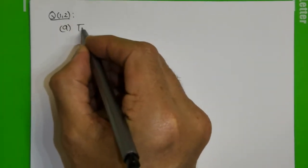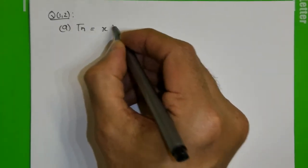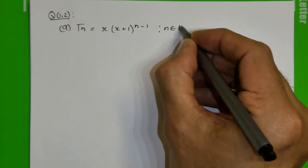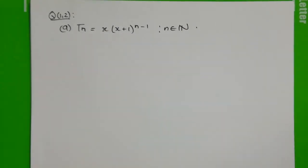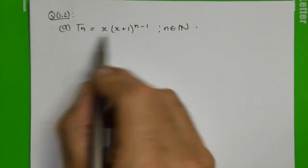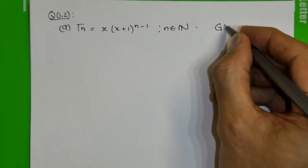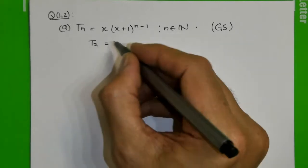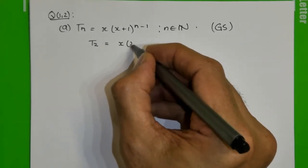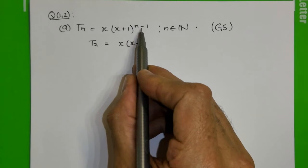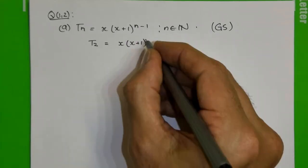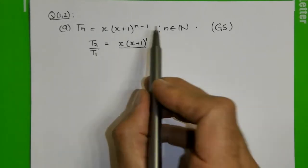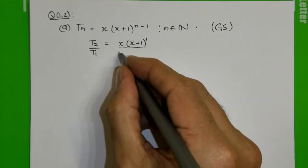First of all, they said Tn is x multiplied by x plus 1 to the power of n minus 1, where n is an integer. They ask us for the constant ratio, so we have to find two consecutive terms. Remember, they told us it's a geometric sequence. So term 2 will be x multiplied by x plus 1 to the power of 2 minus 1, which is 1. We're going to divide it by term 1, so we can work out our constant ratio.